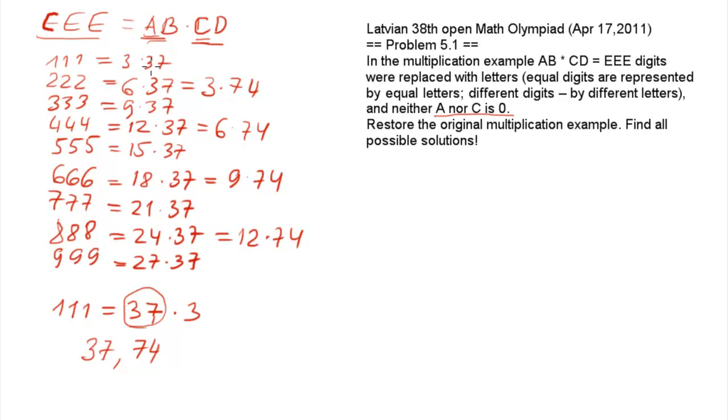Here we should drop all those factorizations which involve one-digit numbers, so all these go away. And we also should drop those which involve two equal digits because different letters represent different numbers, so this one goes away.